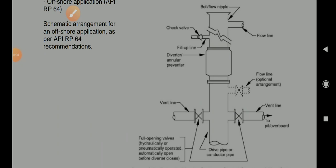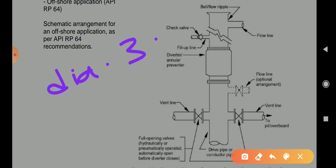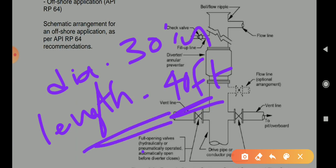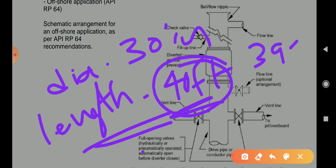The diverter is used initially when drilling the surface section. The initial casing is the conductor casing. The diameter of the conductor casing is 30 inches and the length is 40 feet, though different arrangements are available - typically ranging from 39 to 42 feet.